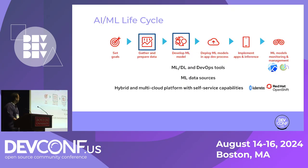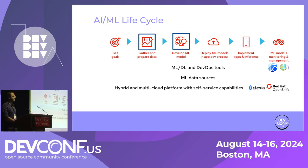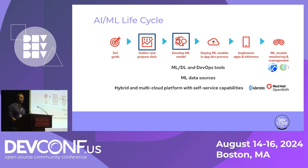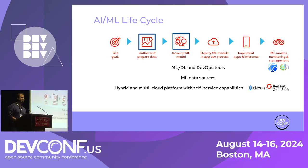In the AI/ML life cycle, we normally start by setting a goal, then go through preparing the data. After data preparation, you start developing the model — there's training, testing, refining, and you keep doing that. Once you've generated a model, you try to deploy it. Then based on deployment, you get some inference and start to gather metrics.